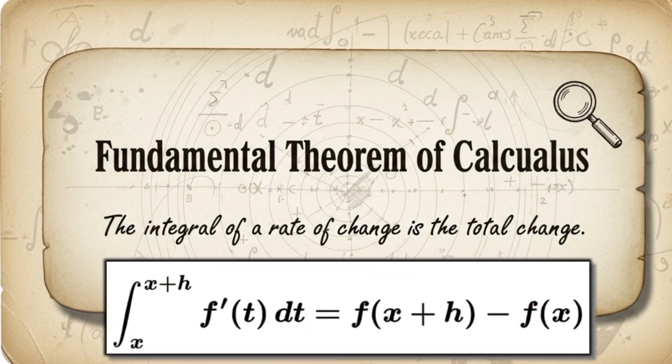from some point x to another point x plus h is exactly equal to the original function evaluated at the endpoints, f of x plus h minus f of x. This theorem is the bridge that connects our two definitions.